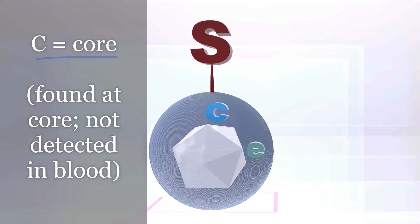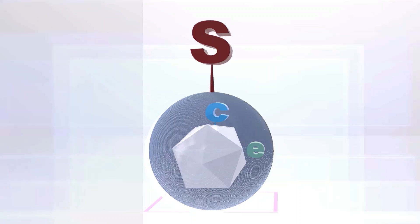Then we have the c antigen — C for core. Unlike the s antigen and the e antigen, the c antigen cannot be detected because it stays at the core and never goes to the blood. It only becomes relevant when we start talking about antibodies.